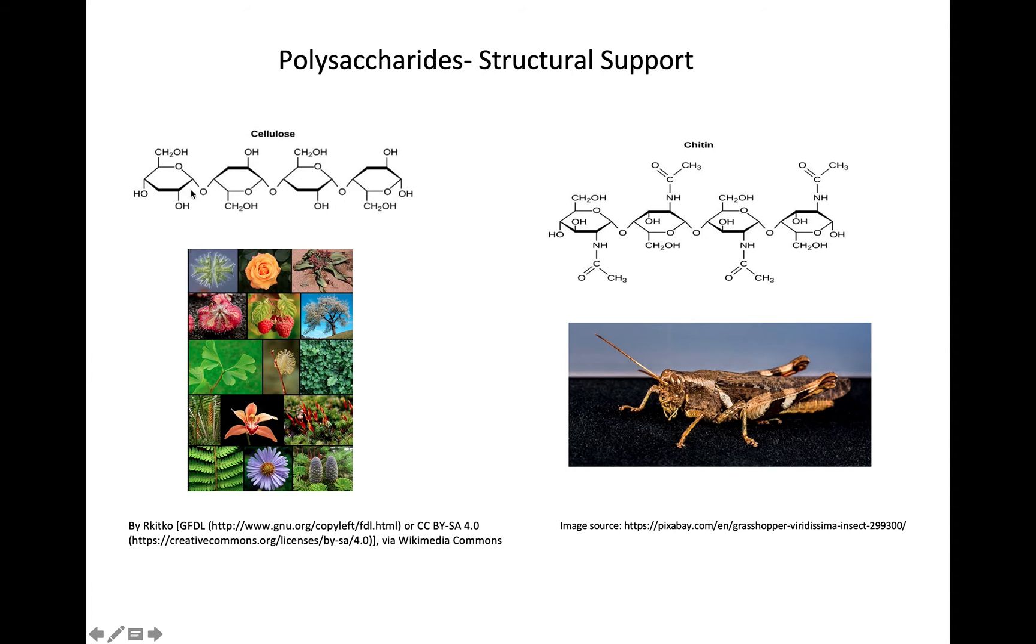So cellulose is shown here as a single chain, but actually it is a multi-chain molecule. The same thing with chitin. Some insects have an exoskeleton. So unlike us, where we have our skeleton inside of our bodies, they have it outside of their bodies. And it's a really rough material outside. And it is made of a carbohydrate called chitin.